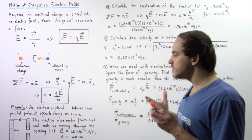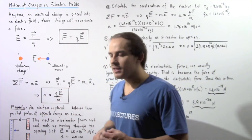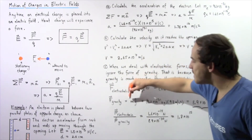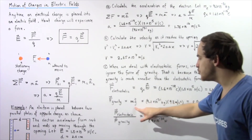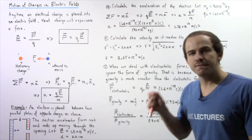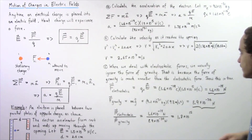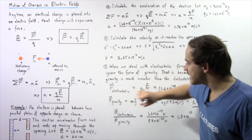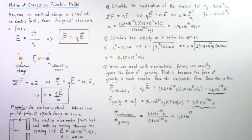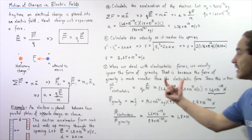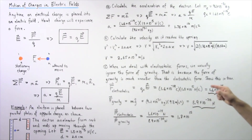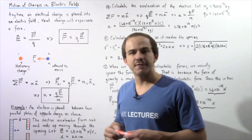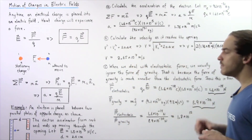Now we calculate the gravitational force on the electron. The force of gravity equals the electron's mass multiplied by the gravitational field g = 9.8 m/s²: F_g = 9.1×10⁻³¹ kg × 9.8 m/s² ≈ 8.9×10⁻³⁰ N. Taking the ratio of the electrostatic force to the gravitational force gives approximately 1.8×10¹⁵. The electrostatic force is about 1.8×10¹⁵ times larger than gravity, confirming that we can safely ignore the gravitational force.